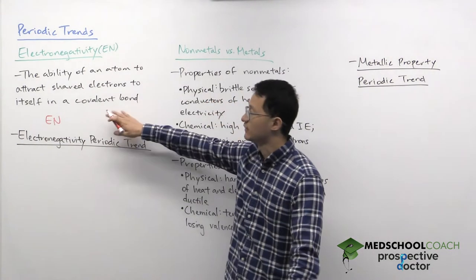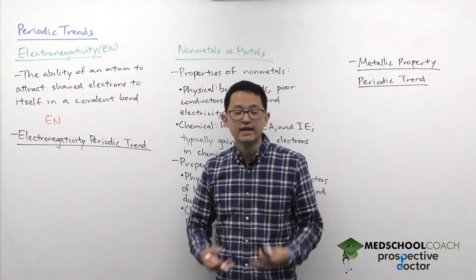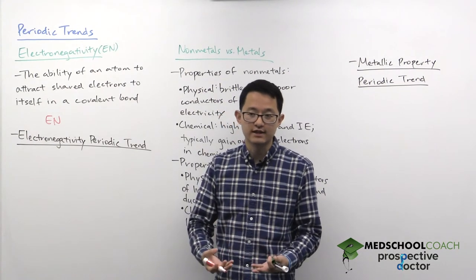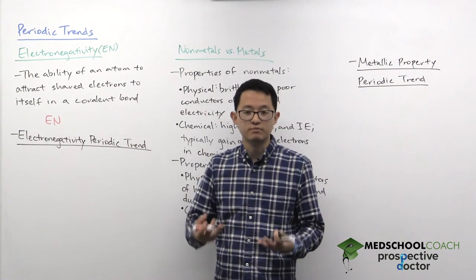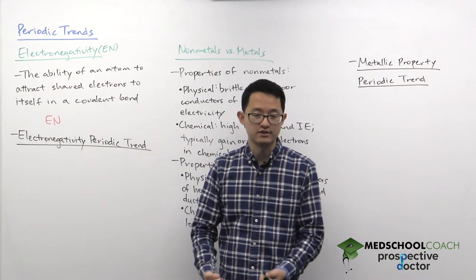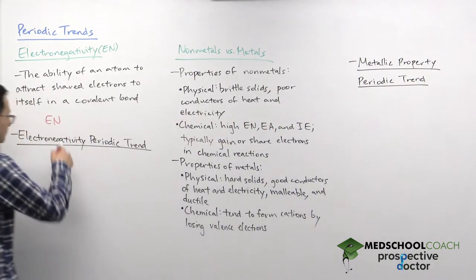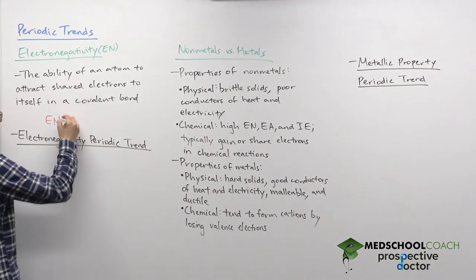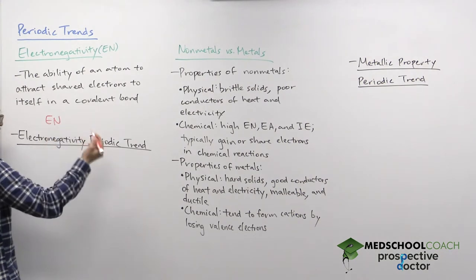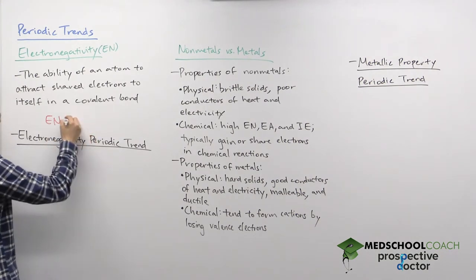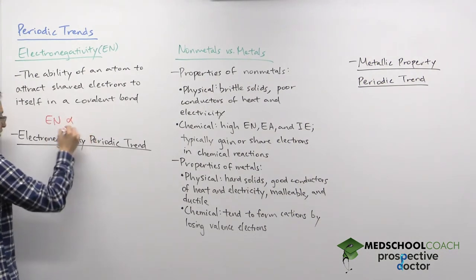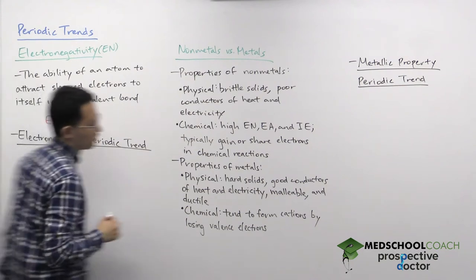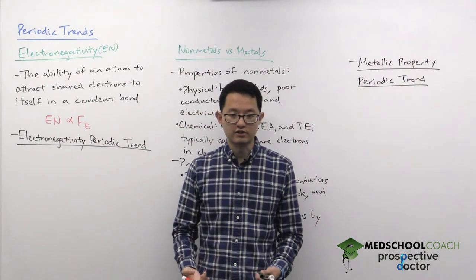Electronegativity is very similar to the electrostatic force, except you're looking specifically at holding on to valence electrons shared in a bond. So if you're better at holding on to your valence electrons, you're also going to have a higher electronegativity. Electronegativity and electrostatic force are proportional to each other.